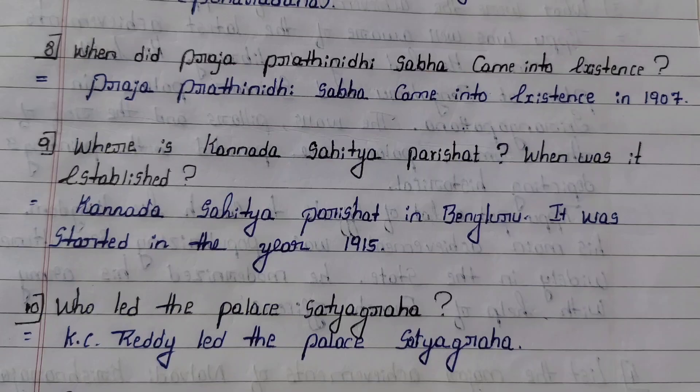Eighth question: When did Praja Prathinidhi Sabha come into existence? Answer: Praja Prathinidhi Sabha came into existence in 1907.